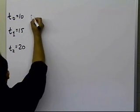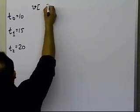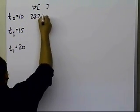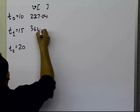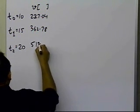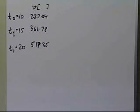Then we had the corresponding values of the velocity, which were given to us 227.04, and then 362.78, and then 517.35. So those are the numbers which were given to us.